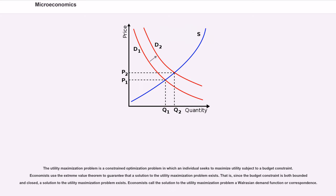The utility maximization problem is a constraint optimization problem in which an individual seeks to maximize utility subject to a budget constraint. Economists use the extreme value theorem to guarantee that a solution exists. Since the budget constraint is both bounded and closed, a solution to the utility maximization problem exists.